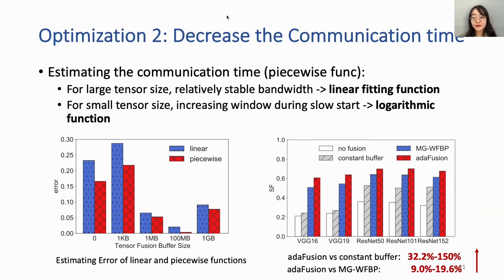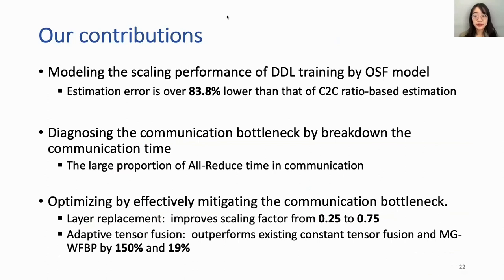When training on different models, our ATF fusion strategy improves scaling performance by up to 115% over constant buffer fusion and 16% over MGWBP. To conclude, we first proposed the OSF model for modeling scaling performance of DDL training, capturing communication overlapping and tensor fusion, with estimation error over 83.8% lower than C-to-C ratio-based estimation. We then diagnosed communication bottlenecks by breaking down communication time. Finally, layer replacement improved the scaling factor from 0.25 to 0.72, and ATF fusion outperformed constant tensor fusion and MGWBP by 115% and 16% respectively.